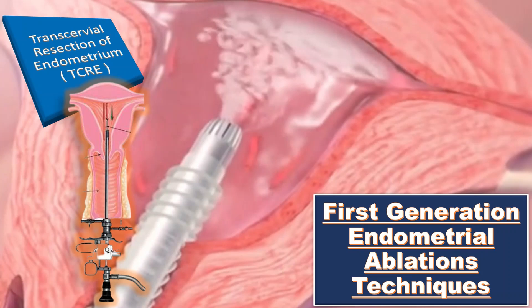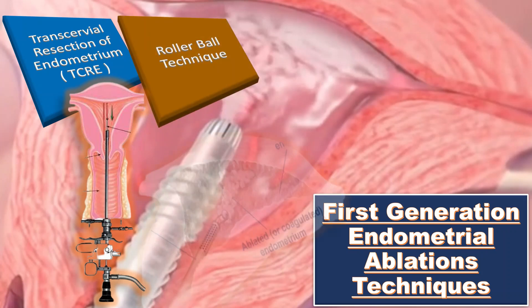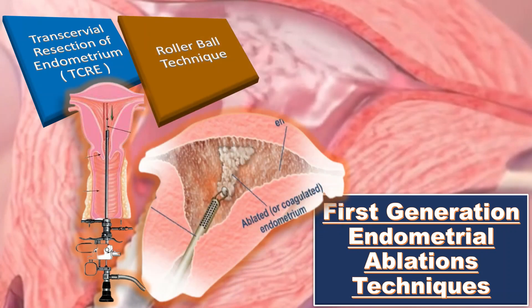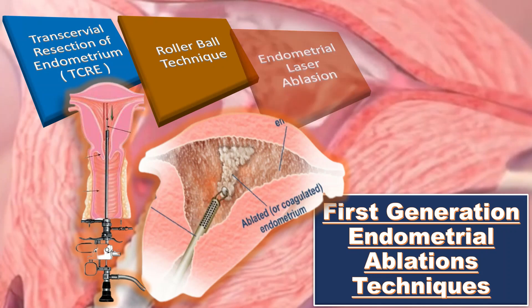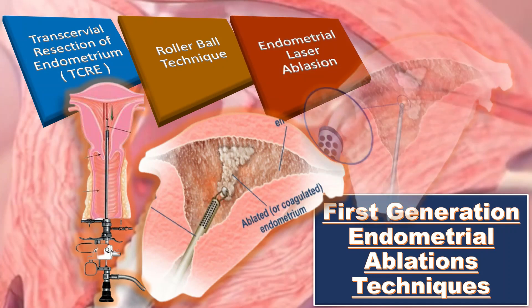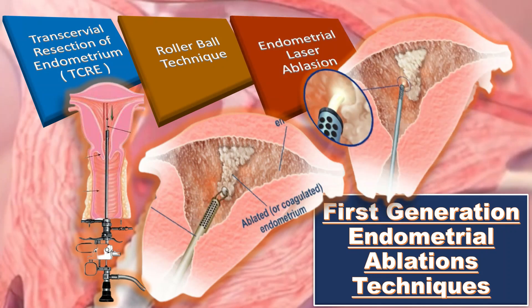The second first-generation technique is the roller ball technique, and the third is endometrial laser ablation. So remember TRL: trans-cervical resection of endometrium, roller ball technique, and laser ablations.